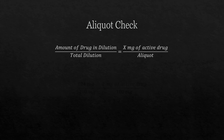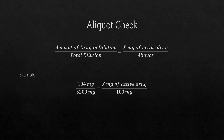The aliquot check: there is a check to make sure you got the right answer. The equation is: amount of drug in dilution over total dilution equals x amount of active drug over aliquot. Using the example, 104 milligrams of drug over 5,200 milligrams total equals x over 100 milligrams (the aliquot). Cross-multiplying gives x equals 2 milligrams, which checks out — that is the amount of active drug we needed.